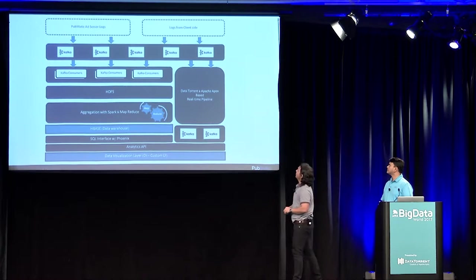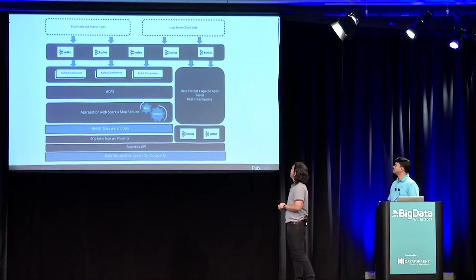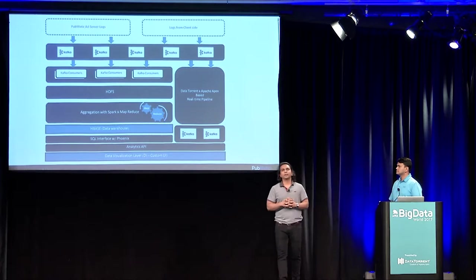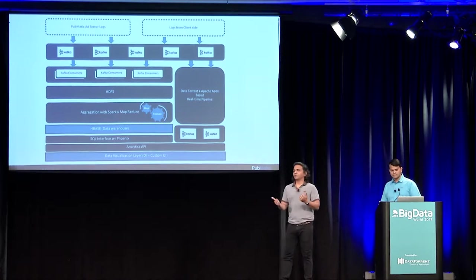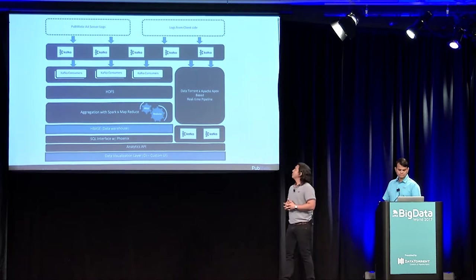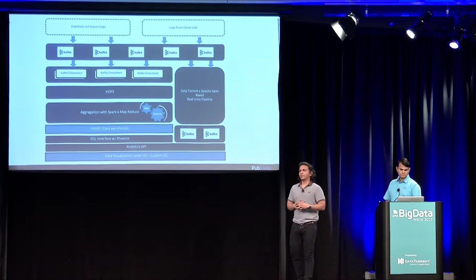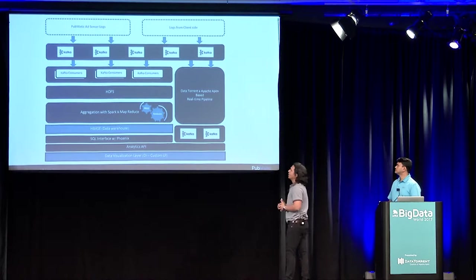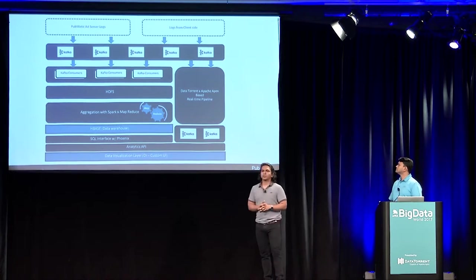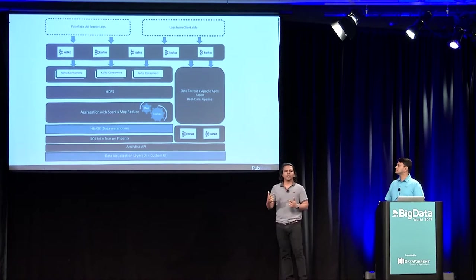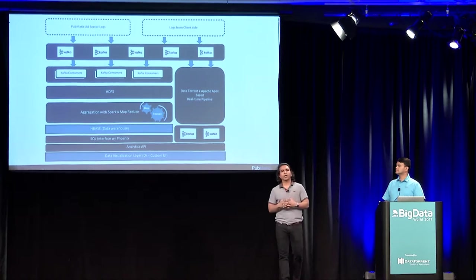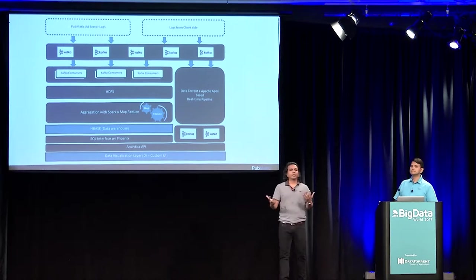The second part is the streaming use case. One of our logs — data generated when someone views an ad using pixels or beacons which fire and generate a URL snippet — is raw data that gets pushed into Kafka as well. We have a DataTorrent Apex pipeline which crunches that data in real time. We have two distinct pipelines which process this data, with two use cases around it.